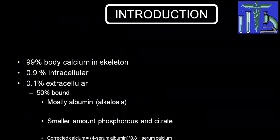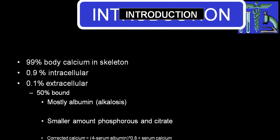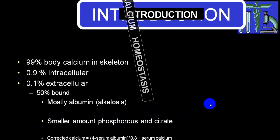Now, you know very well 99% of the body calcium is in the bones. 0.9% is intracellular and only 0.1% is extracellular. Out of that, 50% is bound to albumin — and that albumin can change with acidosis or alkalosis — and a smaller amount is bound to phosphorus and citrate. There is a very small amount which is free, or we call it active, or ionized calcium.